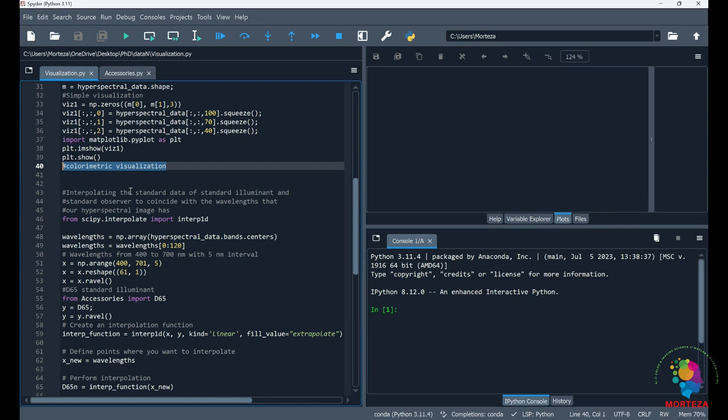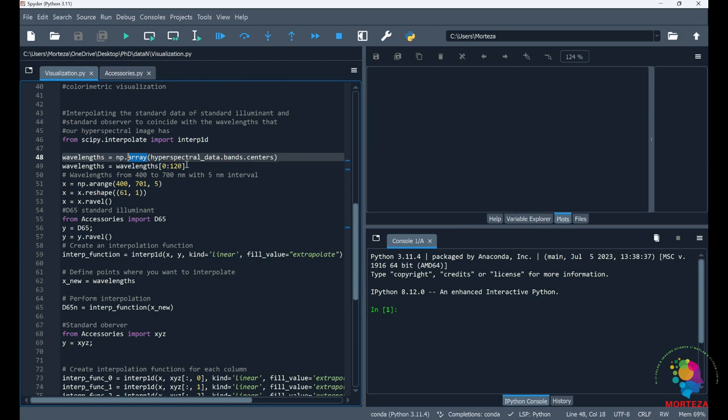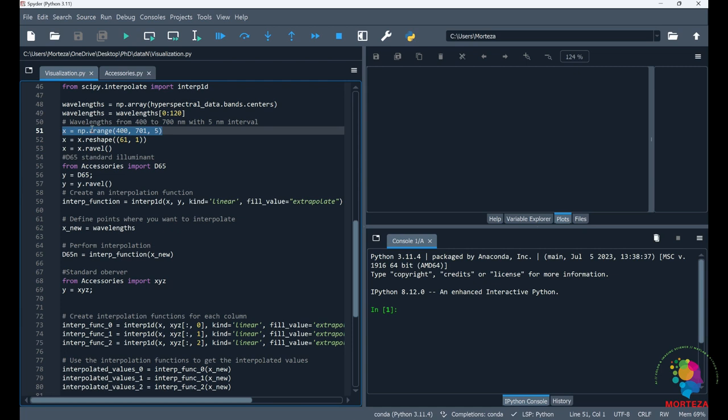But here, it's where the colorimetric visualization starts, which is the best way. As I said, we need to interpolate the standard data of standard illuminant and standard observer to coincide with the wavelengths that the hyperspectral image has. So I need to get the wavelengths that our hyperspectral image has, and these are the standard wavelengths, which is from 400 to 700 nanometer at 5 nanometer interval.